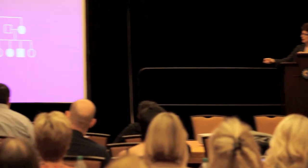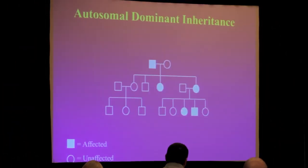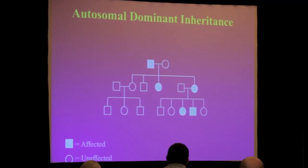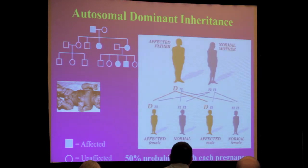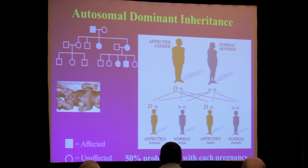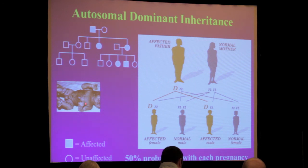When we have an autosomal dominant trait, you have one normal gene given from one parent, and the other parent gives the abnormal gene with a missense mutation in either keratin 5 or 14. When we draw the family tree, we can see that a father has passed it on to a daughter, who may pass it on to a daughter or son. We tend to see generation after generation with the possibility of an affected individual, and it can be either male or female. We give that a 50% probability with each pregnancy.